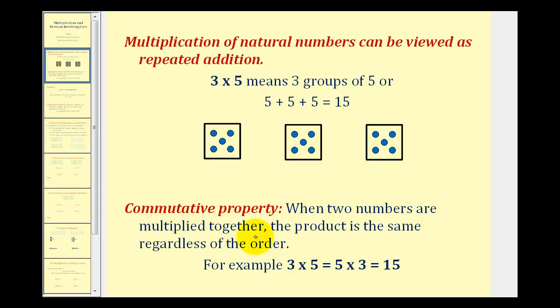Next, the commutative property states that when two numbers are being multiplied together, the product is the same regardless of the order. So three times five or five times three is equal to 15.